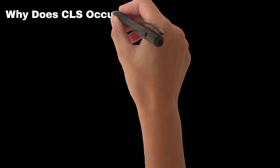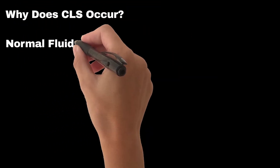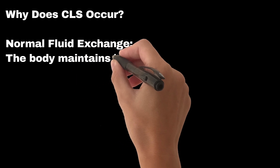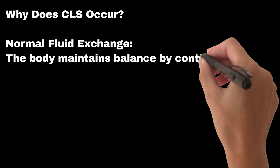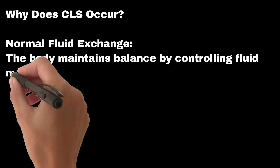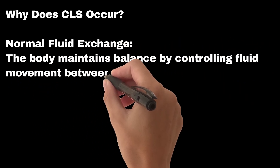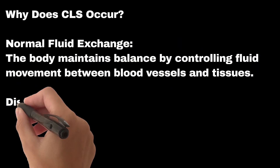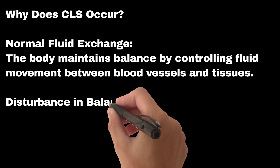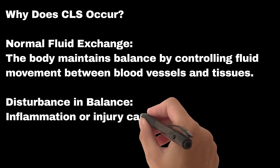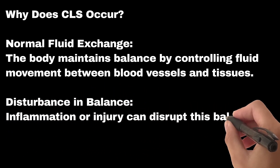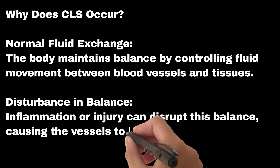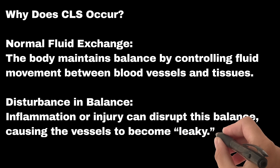Why does CLS occur? Under normal conditions, the body maintains balance by controlling fluid movement between blood vessels and tissues. However, inflammation or injury can disrupt this balance, causing the vessels to become leaky.